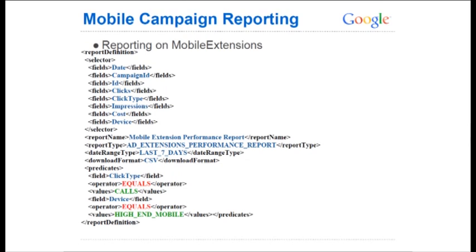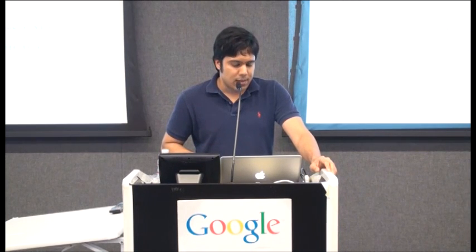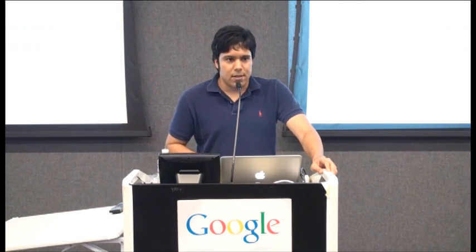To track performance of these campaigns, we set up a report definition in the request payload, selecting fields like date, campaign ID, ad ID, clicks, click type, and device. We use predicates to filter on click type, which helps isolate click-to-calls for our mobile campaigns. You can also filter on device for high-end mobile only, so the reports you get back are strictly for your mobile campaigns.